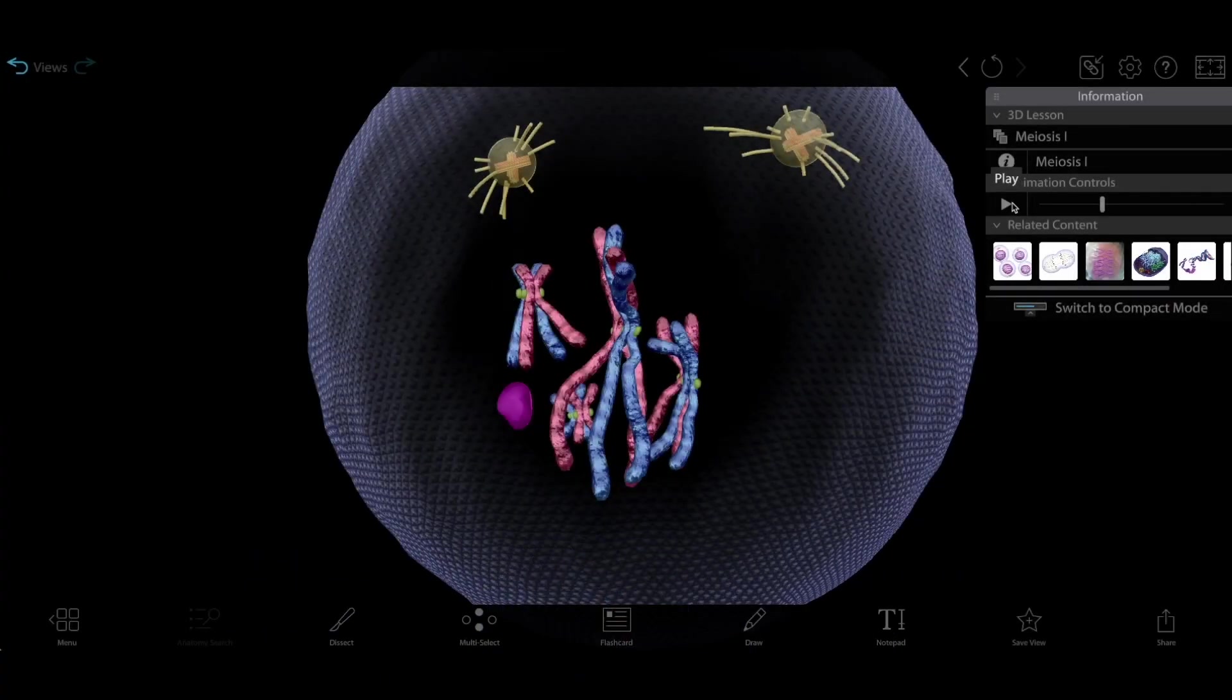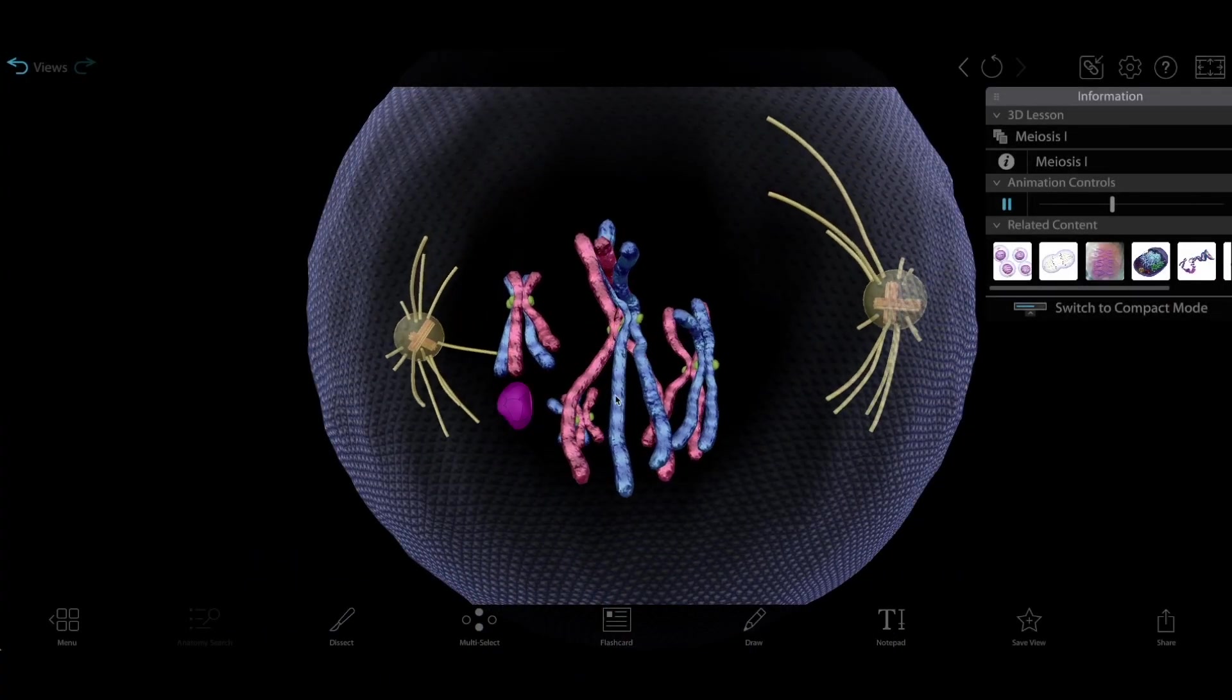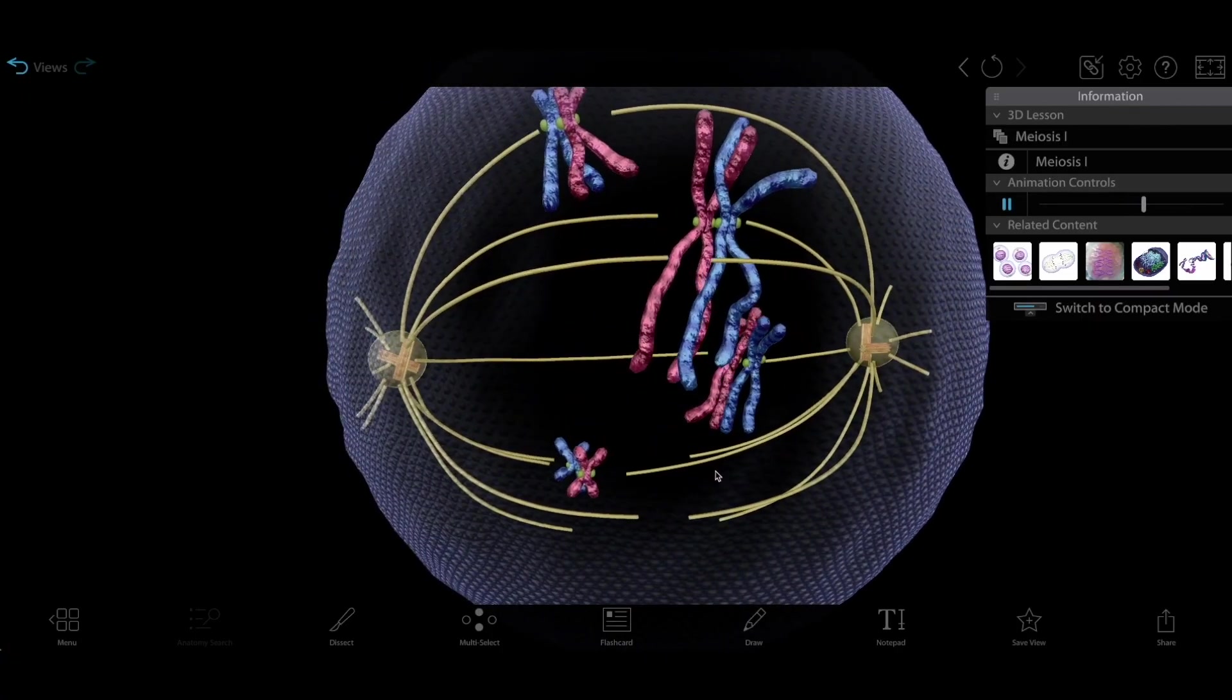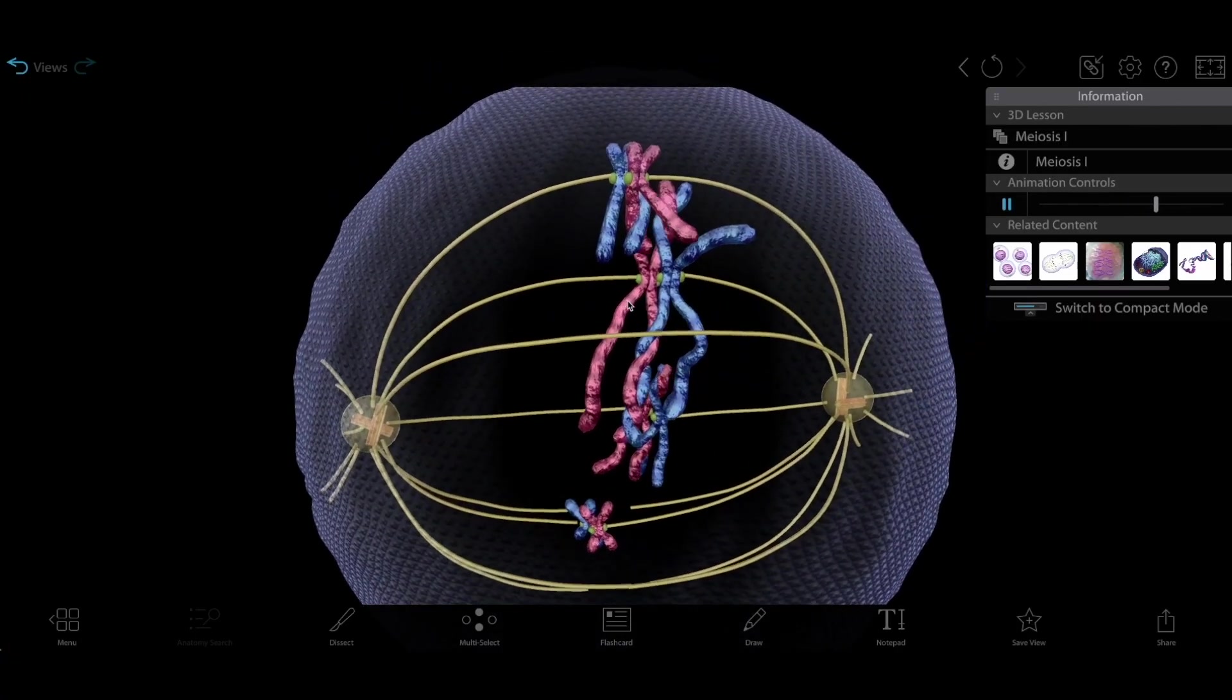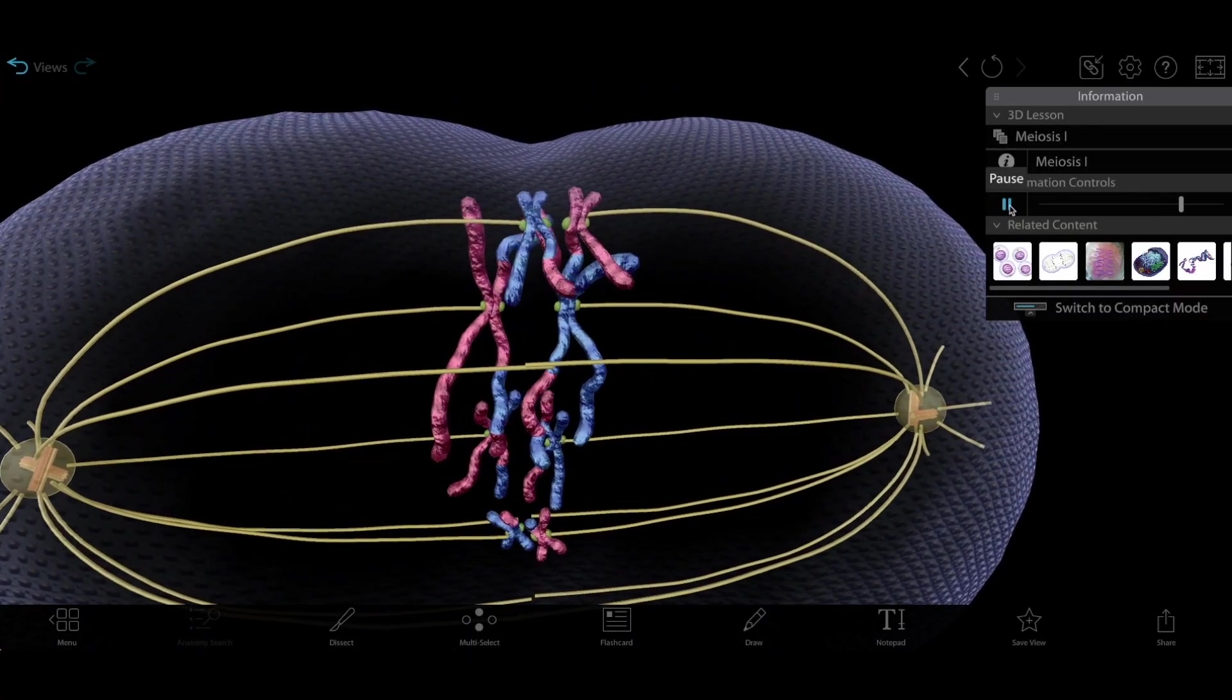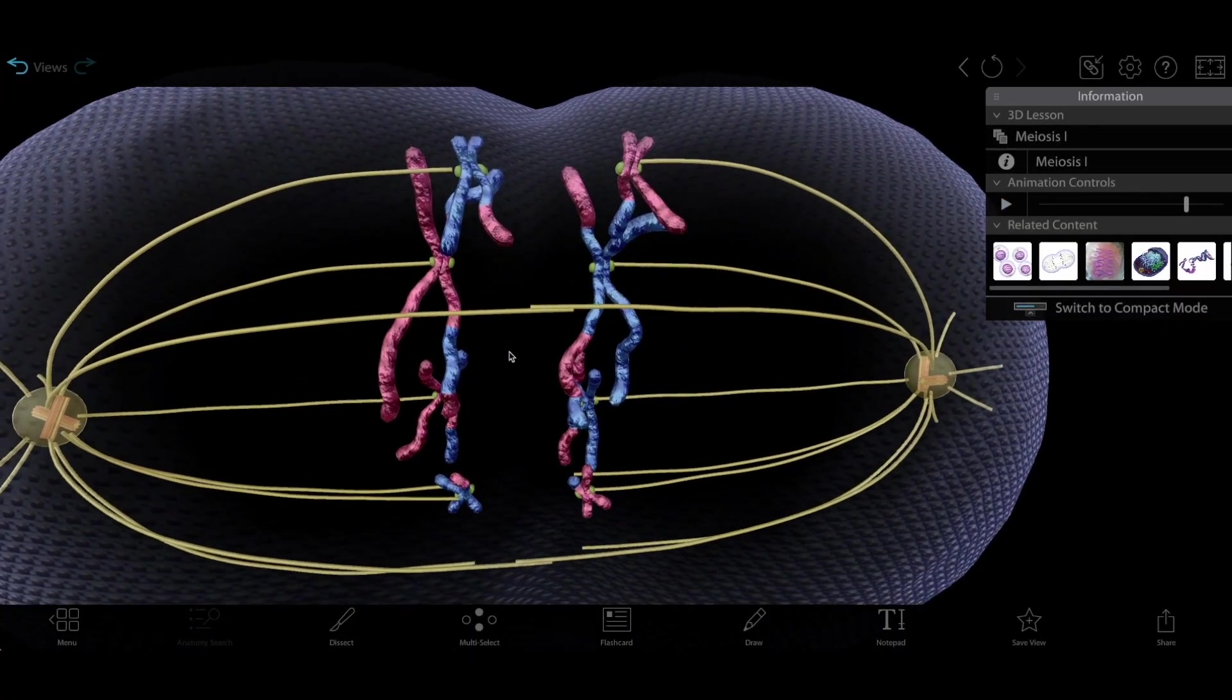Now once we've got the tetrads, something even crazier happens. Pieces of homologous chromosomes swap equivalent segments of DNA. This is called crossing over or recombination. The chromosomes in the tetrads are no longer uniformly red or blue.